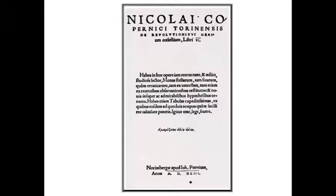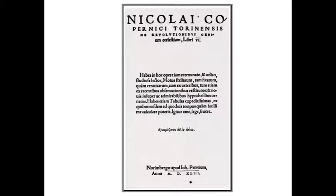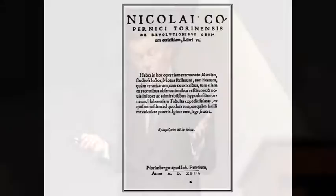In 1543, the year of his death, Copernicus published his book on the revolutions of the celestial bodies in Latin, as all scientific books were published at the time. The narrative points out that what Copernicus did was to change the position of the Earth, which was being perceived as the center of the known universe, and made the Earth just one more planet around the Sun.